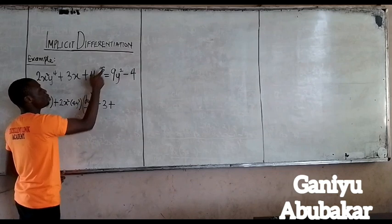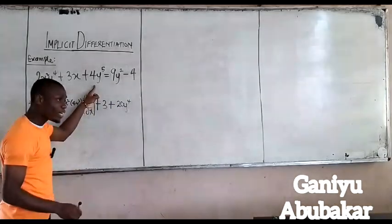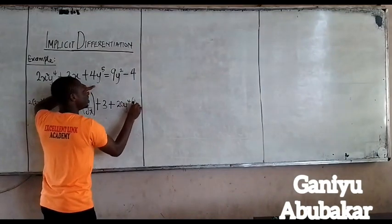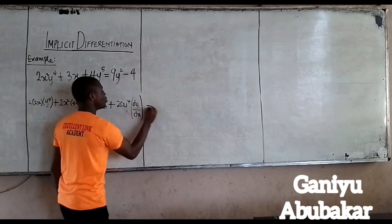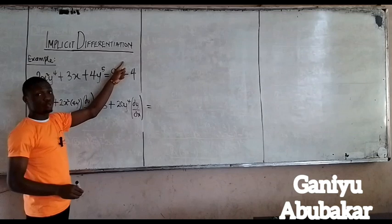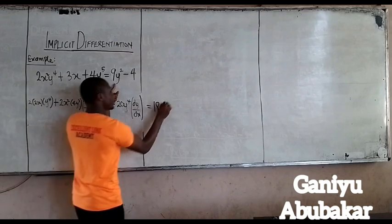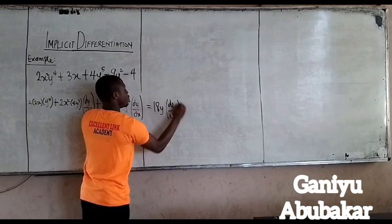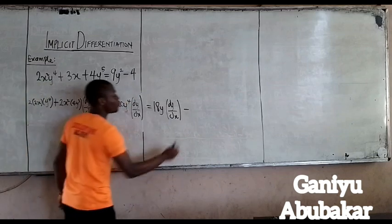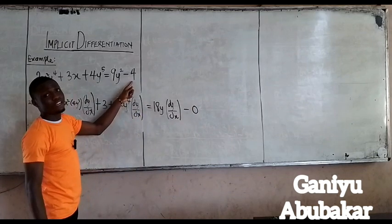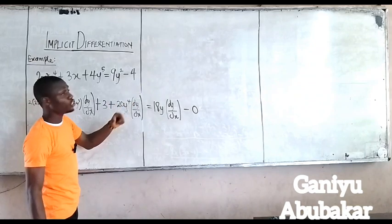Next, if I differentiate 4Y to power 5, I will have the value with dy/dx attached to it. So if I differentiate 9Y to power 3, I get 18Y with dy/dx attached. Minus — differentiate 4: 4 is a constant value, so I will have zero. Watch our previous video to understand why constants are always zero in differentiation.